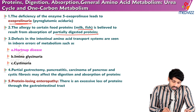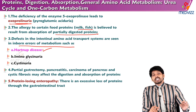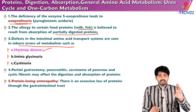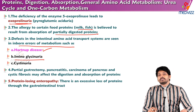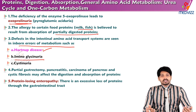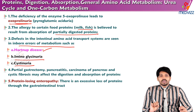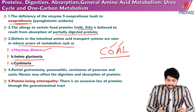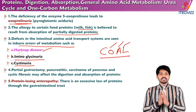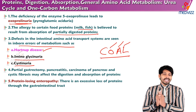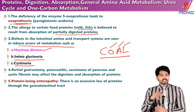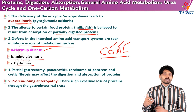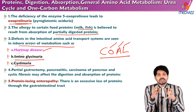Defects in intestinal amino acid transport systems are seen in inborn errors of metabolism. In Hartnup's disease, the transport mechanism for the aromatic amino acid tryptophan is absent. Iminoglycinuria involves a defect in the carrier responsible for transportation of glycine, causing glycine to be excreted. In cystinuria, remember the mnemonic COAL — Cystine, Ornithine, Arginine, Lysine — all four share the same transport mechanism. If this transporter is absent in renal tubules, not only cystine but also ornithine, arginine, and lysine are excreted in the urine.